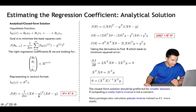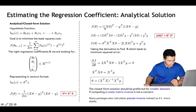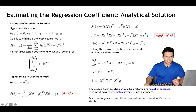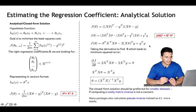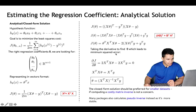We expand the parentheses and rearrange the terms. Recall that (AB)ᵀ = BᵀAᵀ, so (Xθ)ᵀ becomes θᵀXᵀ. After multiplying all terms and rearranging, we obtain our cost function in vector/matrix format.